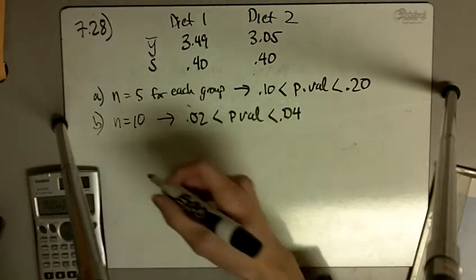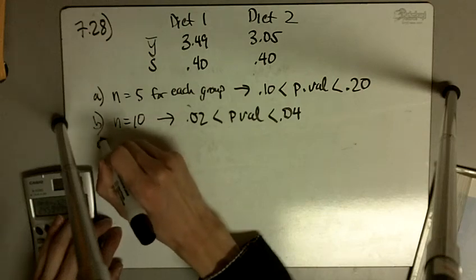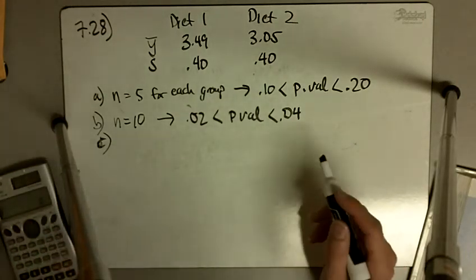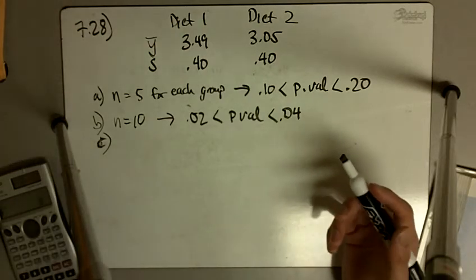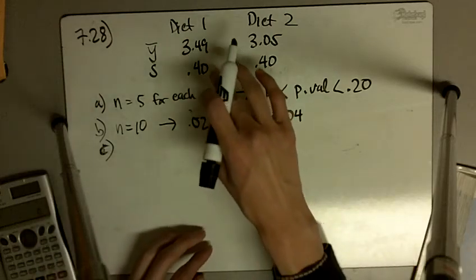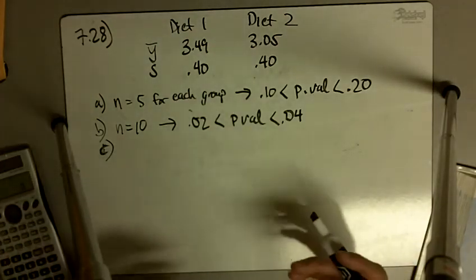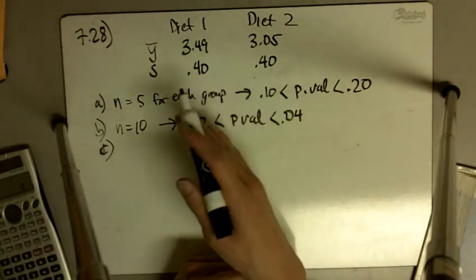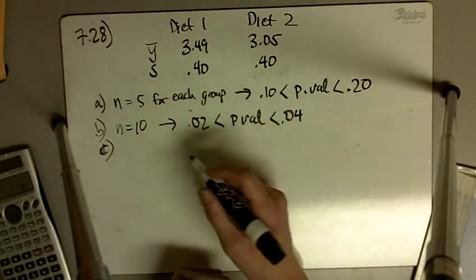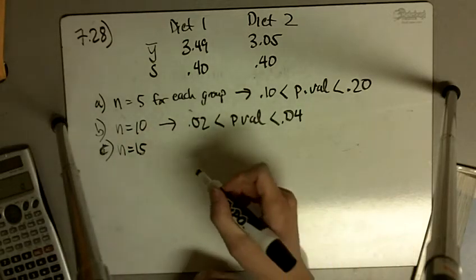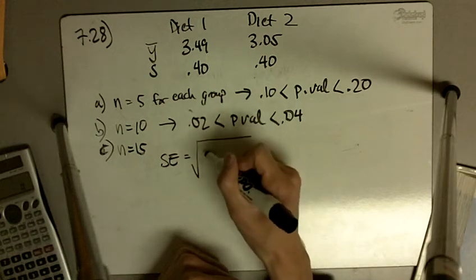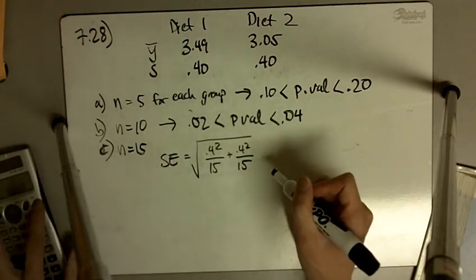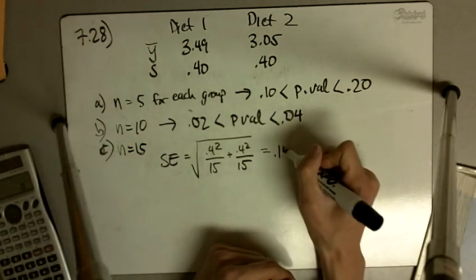So you can see that if we include more pigs in our sample, the probability of observing this kind of difference gets smaller and smaller if we were to assume that the null hypothesis is true. The null hypothesis in this case being that diet 1 and diet 2 does not have a difference. But when we include more and more, the probability of us observing something with this kind of difference becomes smaller and smaller. And we'll see that with n equal to 15, it gets even smaller. So the standard error in this case, I'm going to just blitz through this, 0.4 squared over 15 plus 0.4 squared over 15. If you do the math there, you get 0.1461.